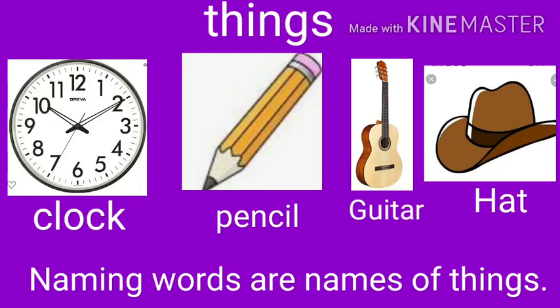Let us talk about things now. For example, clock, pencil, guitar, hat — these all are names of things. So we can also say that naming words are names of things.